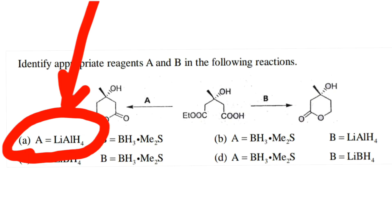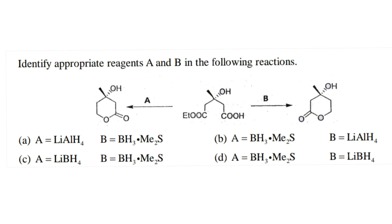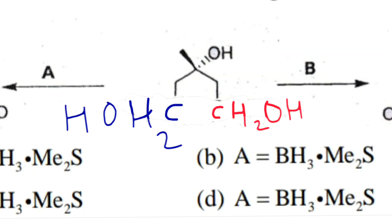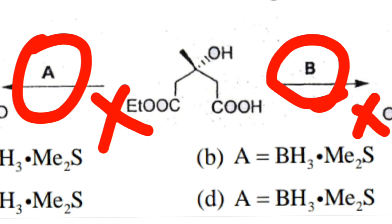The first reagent, lithium aluminium hydride (LiAlH4), is a strong reducing agent. Both of these groups will be reduced to alcoholic group, so it will not be the favorable A or B.